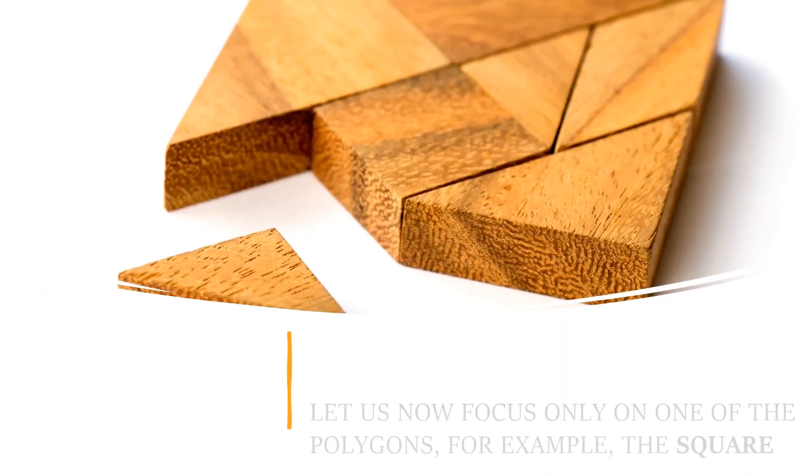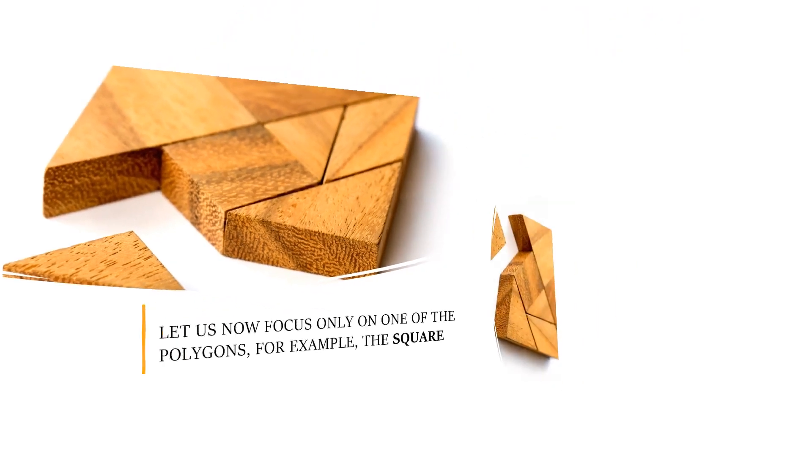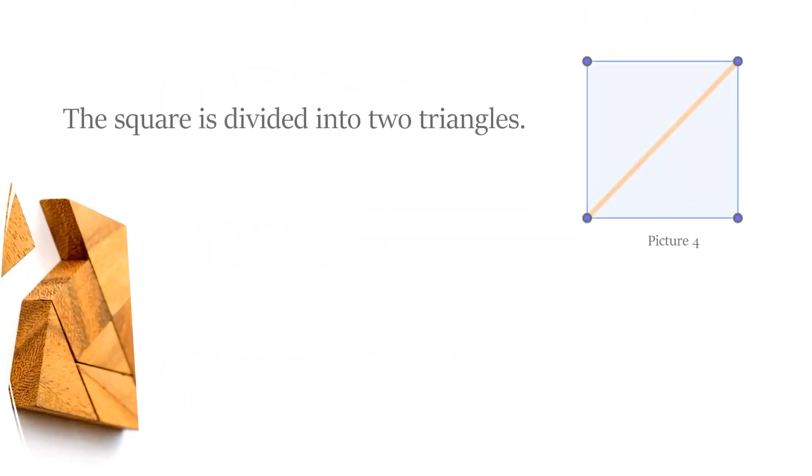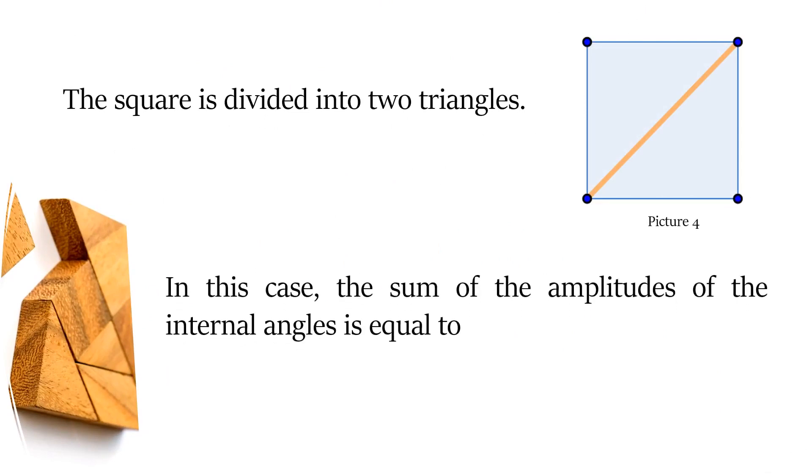Let us focus now on one of the polygons, for example, the square. The square is divided into two triangles. In this case, the sum of the amplitudes of the internal angles is equal to 180° + 180°, that is, 2 × 180°.